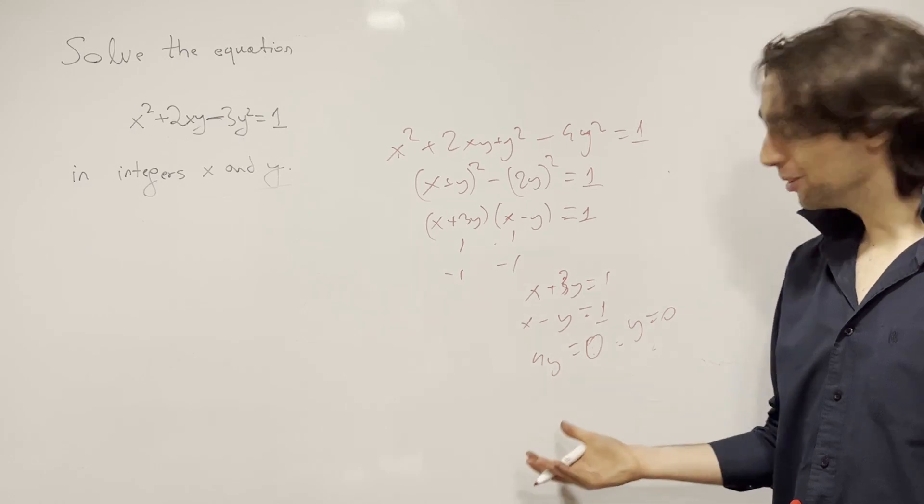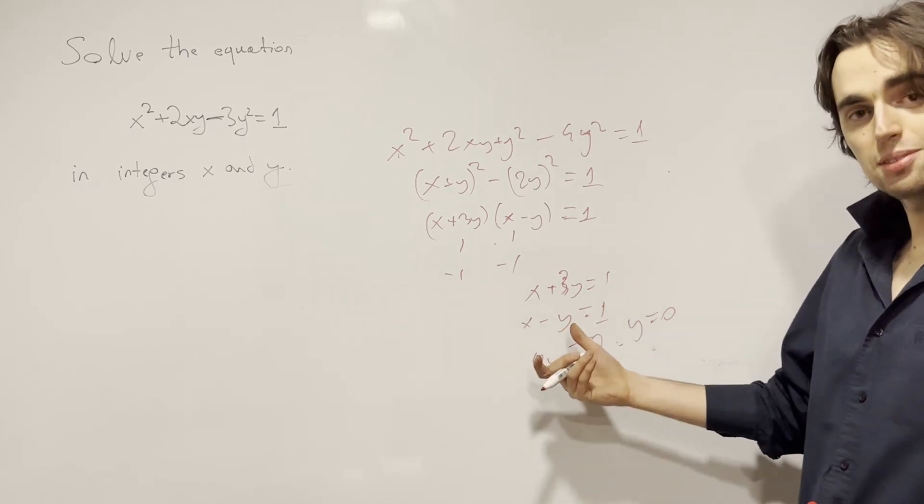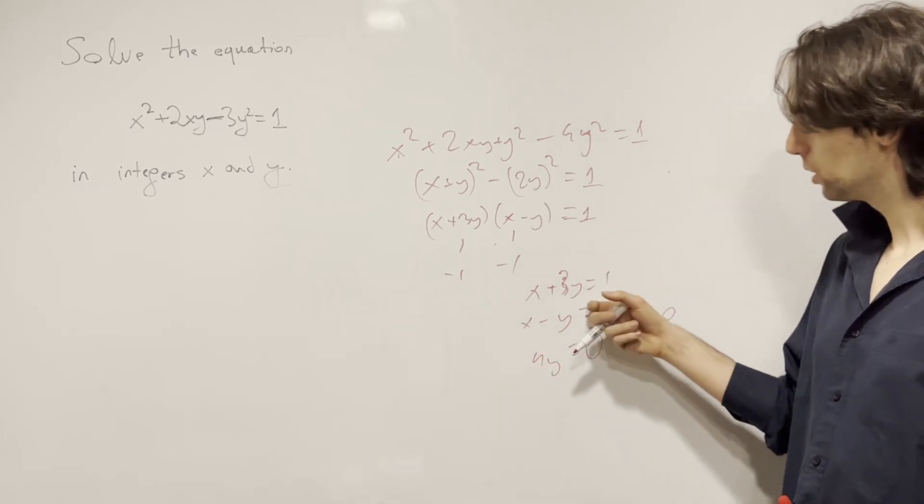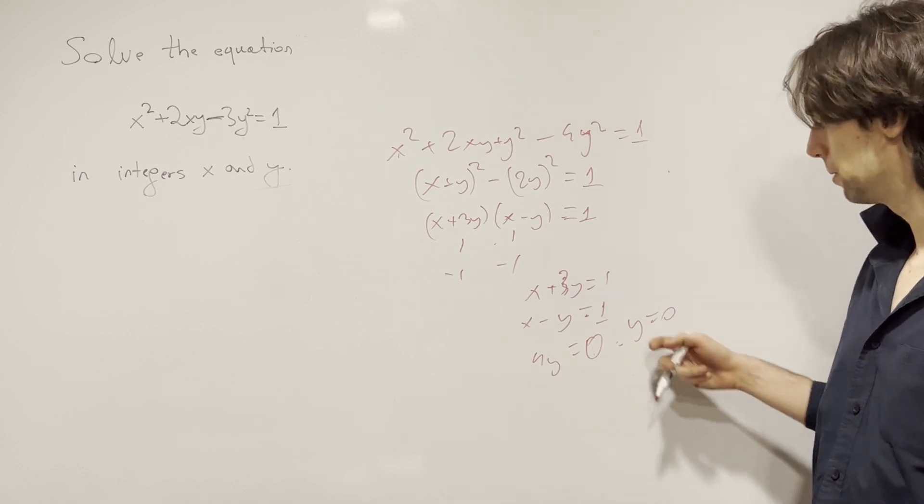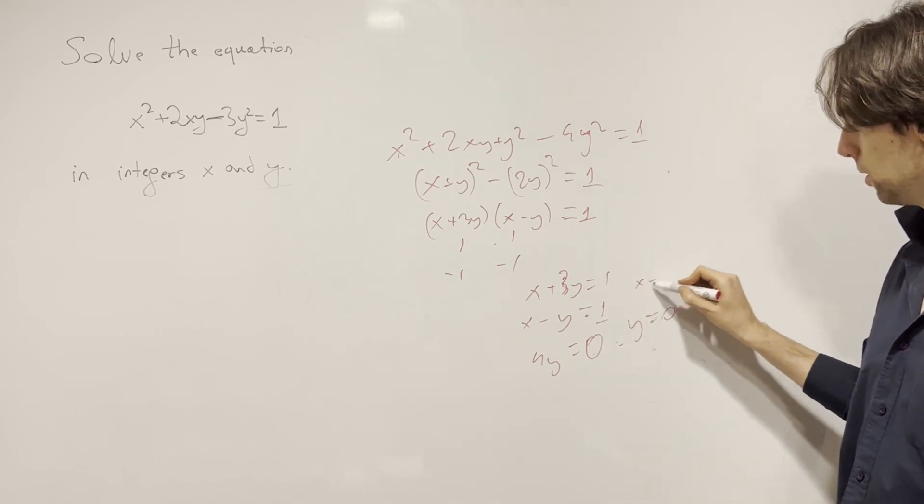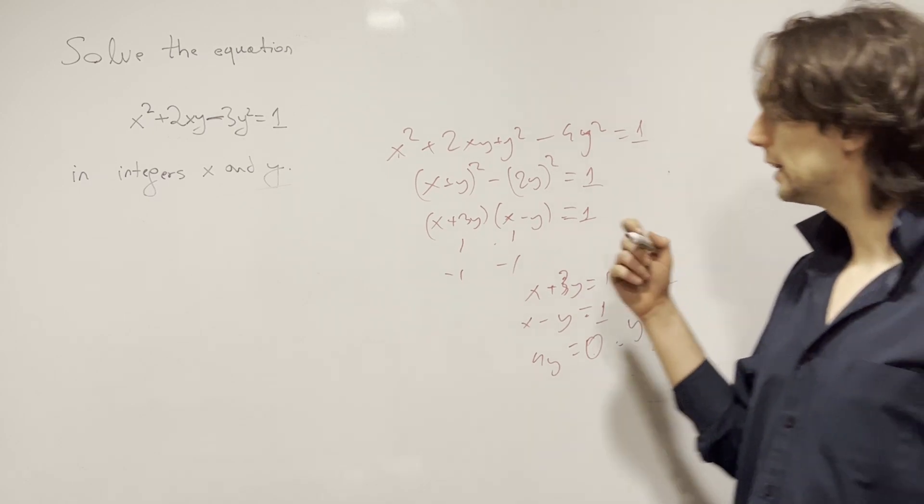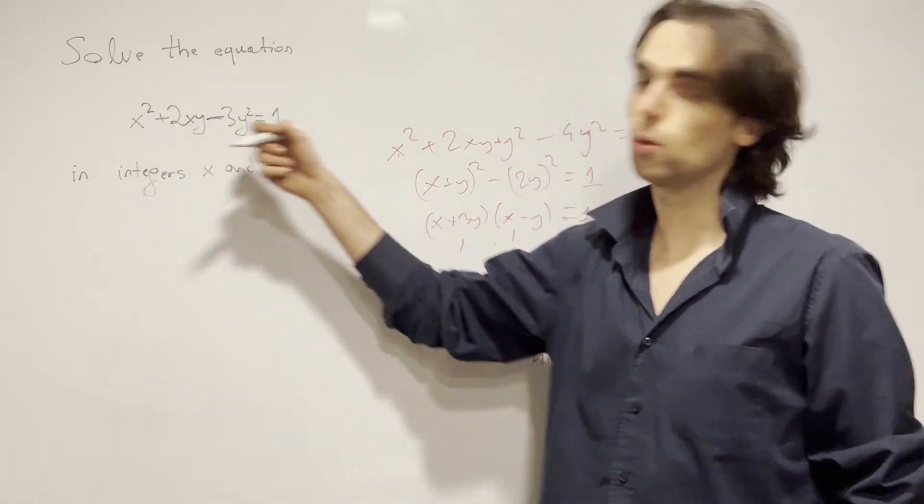So check your algebra. Double check it. I just messed up. You double check it, see if you've actually messed up. So this means y is equal to 0, x is equal to 1, and that ends up being a solution. 1 squared is 1.